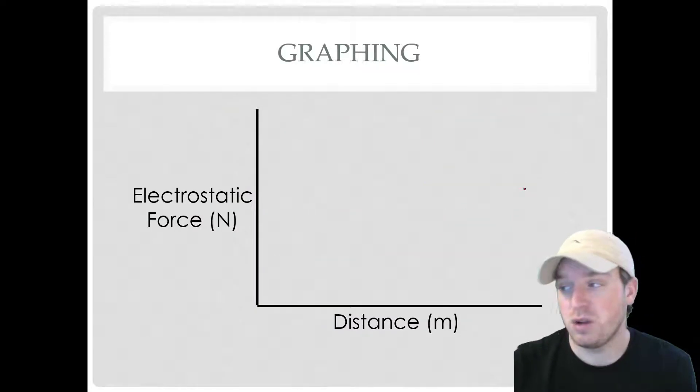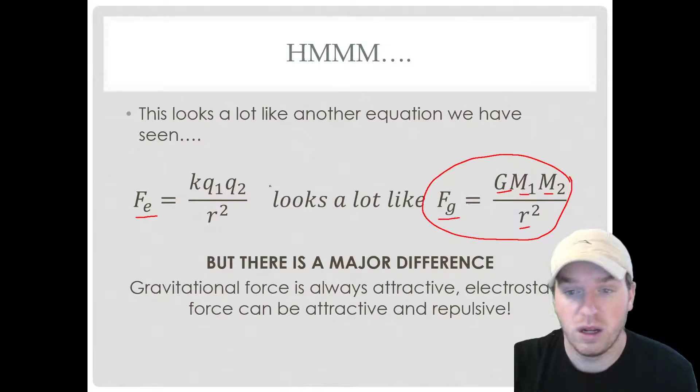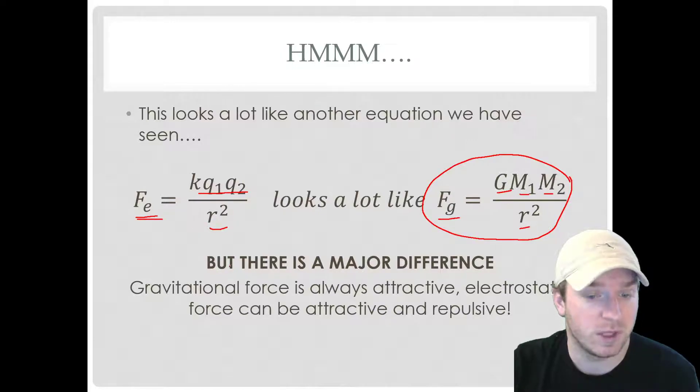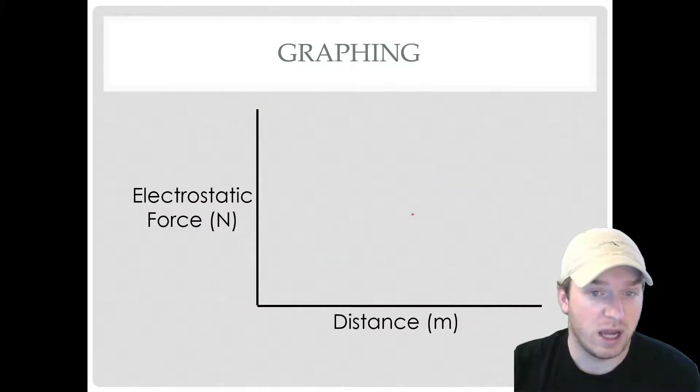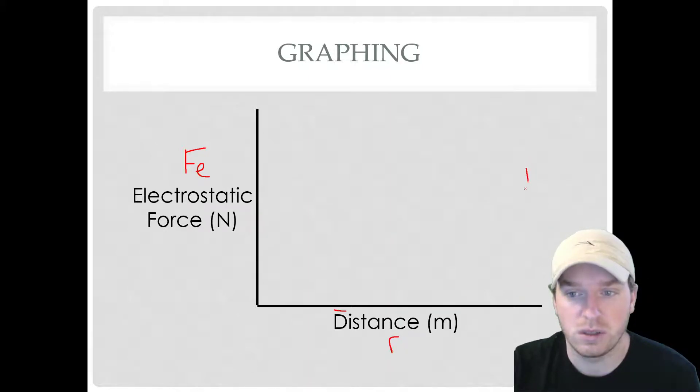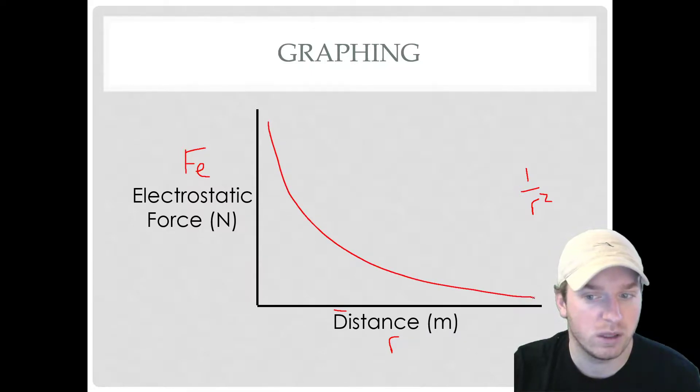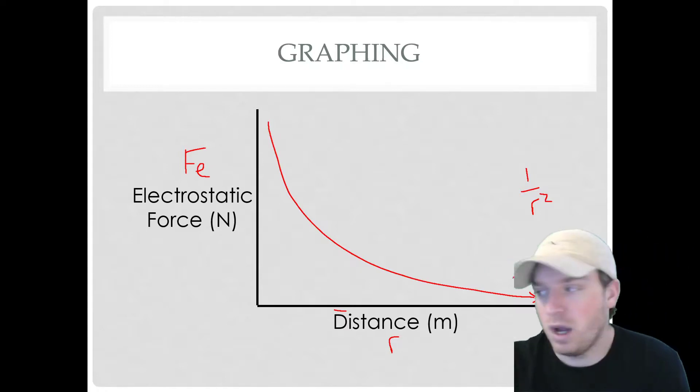And last but not least, just to describe the relationship between this equation right here. Force electrostatic, we have the two charges and the distance between them squared. So if we're looking at the actual electrostatic force Fe and the distance which is r, these two have an inverse squared relationship. So as the distance, as two objects get further and further apart, their electrostatic force is going to be decreasing, but it's also going to be decreasing exponentially. And so we have a graph that looks a little something like that.